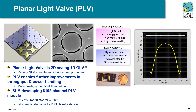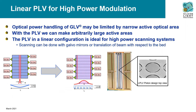We are currently developing an 8192 channel module. The PLV may also be operated in a linear manner, similar to the GLV, with a device we call the Linear Planar Light Valve, or LPLV. We can make arbitrarily large linear pixels as compared to the GLV to meet very high power demands. The pixels may then be focused down to create a linear pattern that is scanned across a media for material processing applications.